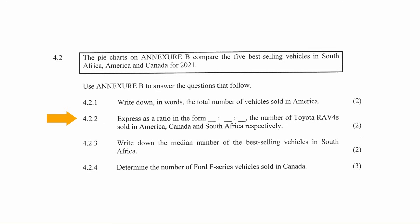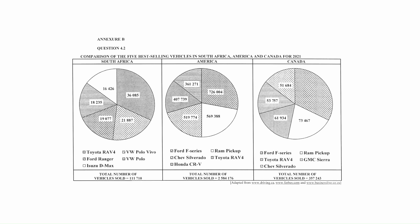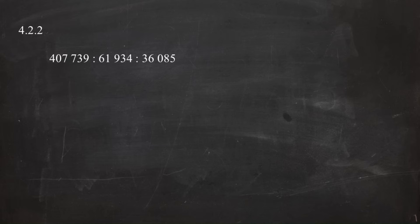In question 4.2.2, you have to express as a ratio of three numbers the number of Toyota RAV4 vehicles sold in America, Canada, and South Africa respectively. The word 'respectively' means you write the ratios in order: America first, Canada second, South Africa third. From the pie charts, Toyota RAV4 vehicles sold: America — 407,739; Canada — 61,934; South Africa — 36,085. Writing these as a three-number ratio gives 407,739 : 61,934 : 36,085.